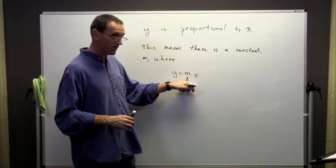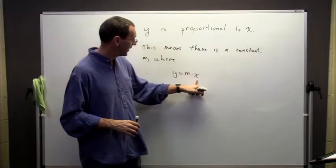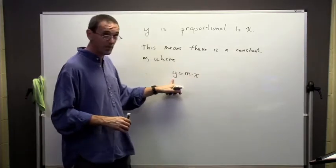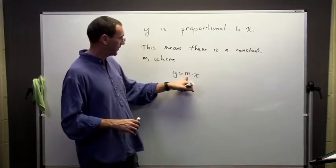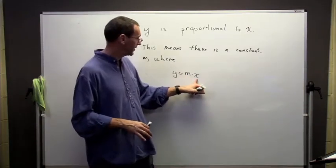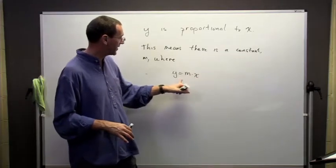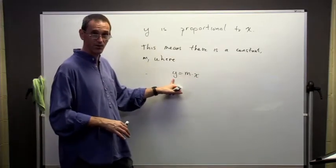If m is a large positive number and x changes a little bit, we're going to see a big change in the y value. If m is a number close to zero, but positive, say 0.1, then if I see a small change in x, I'm going to see an even smaller change in the y.